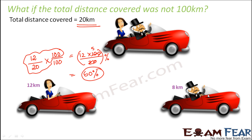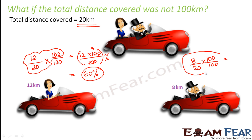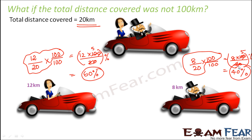What about Mr. Smith? He covered 8 kilometers out of 20 kilometers. So let's multiply the numerator and the denominator by 100. This can be written as 8 × 100 divided by 20 percent, which equals 40. So Mr. Smith covered 40 percent. One interesting thing to observe here is that if you add these two — 60 plus 40 — you get 100, because we are talking about how much out of 100.